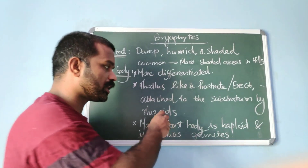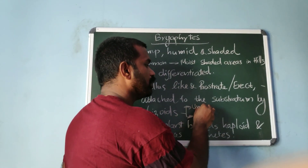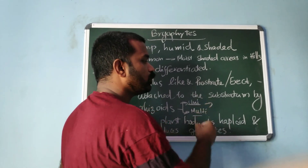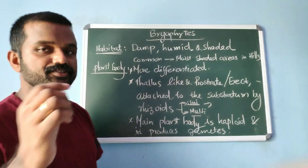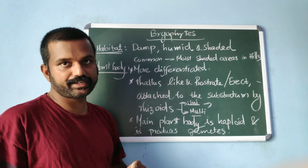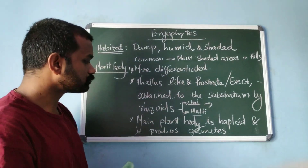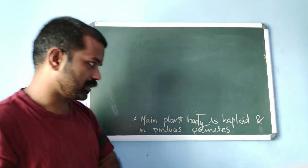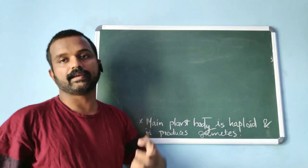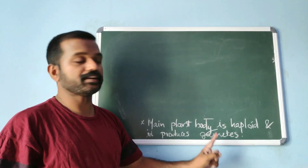These rhizoids can be either unicellular or multicellular. Unicellular rhizoids are seen in liverworts and multicellular rhizoids are seen in mosses. The main plant body is the gametophyte, because it produces gametes.